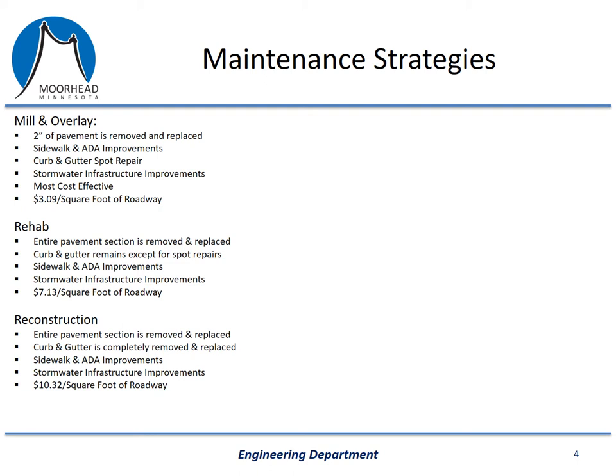A mill and overlay is the simplest of the three types of projects. During a mill and overlay, we remove the top couple inches of pavement using a milling machine, and then we put down a couple inches of new bituminous or asphalt pavement. During these projects, we are also required by law to update sidewalk and pedestrian ramps at intersections to make them ADA compliant. We will replace certain sections of curb and gutter if it isn't draining or if it is significantly damaged or broken up. We will also make repairs to storm sewer inlets and manholes if needed. A mill and overlay project is the most cost-effective project we have — we get the most life out of our roads for the least amount of money.